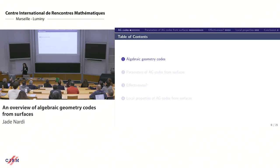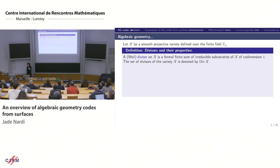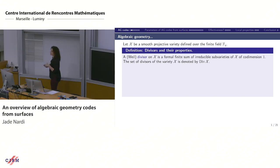To define an algebraic geometry code, I need algebraic geometry. First I need X, a smooth projective variety defined over a finite field F_q. A divisor on this variety is a formal finite sum of irreducible sub-varieties of codimension 1. On a curve it's a sum of points; on surfaces it's a sum of curves. The set of divisors is denoted Div(X).